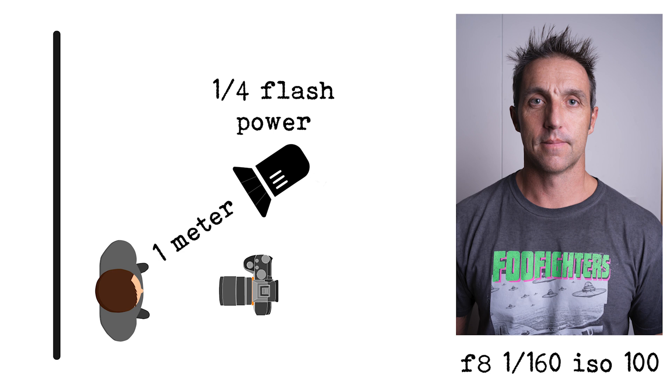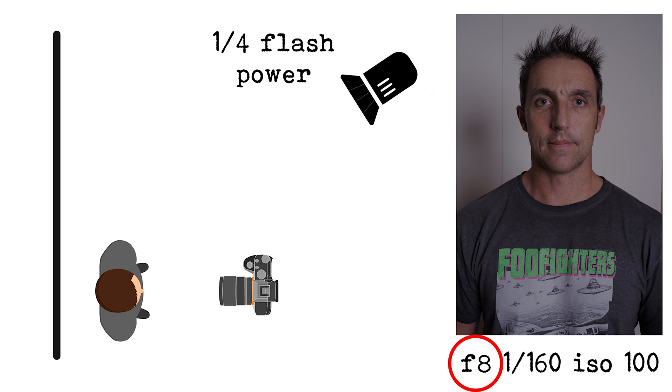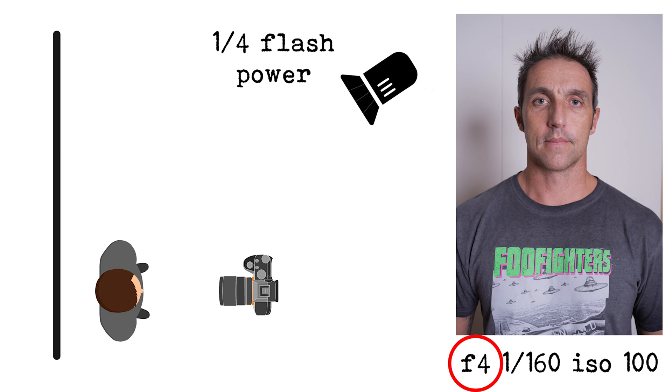Another way to look at it: if you leave your flash power at one quarter power, you would have to increase the amount of light getting into your camera by two stops — so from f8 to f4, or ISO 100 to ISO 400. Remember, as your settings double or halve every time you change by one stop, changing by two stops will change the amount of light by a factor of four. So changing from f8 to f4 is two stops of light — f8 to f5.6 will double it once, and from f5.6 to f4 will double it once again, giving you four times the amount of light into your camera.